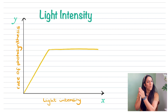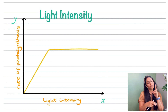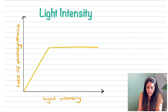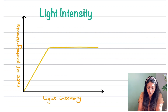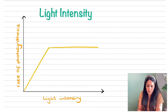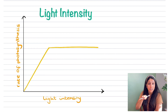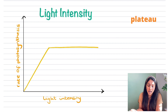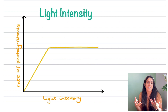Remember: x comes before y in the alphabet, and you always crawl before you can walk — that's how you remember the axes. As light intensity increases, the rate of photosynthesis also increases. But at a certain point the graph changes direction and starts to plateau — it goes flat. We must ask ourselves what is causing it to go flat, because it's not light intensity — there's plenty of that. Something else is limiting the rate of photosynthesis from increasing any further.